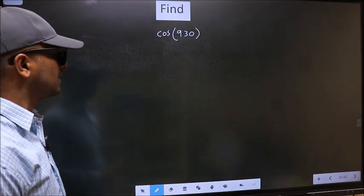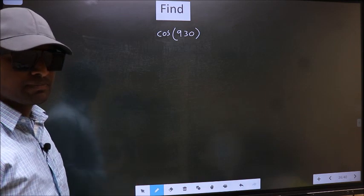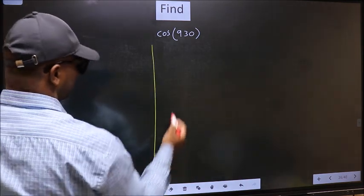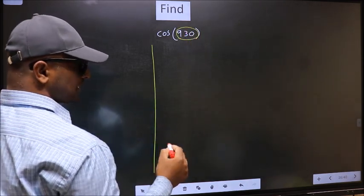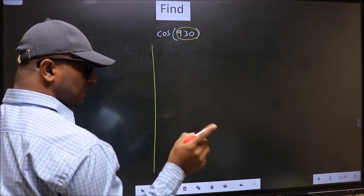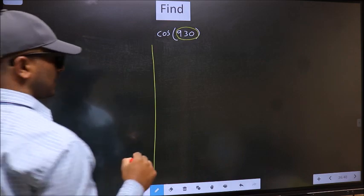Find cos 930. To find this, we should follow this method. Here we have 930. Now you should check 930 lies between which two multiples of 180. What I mean is,